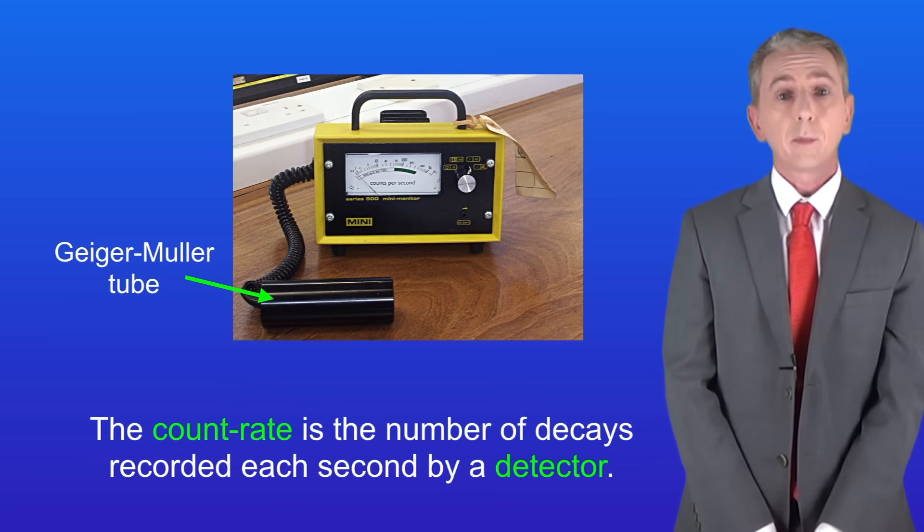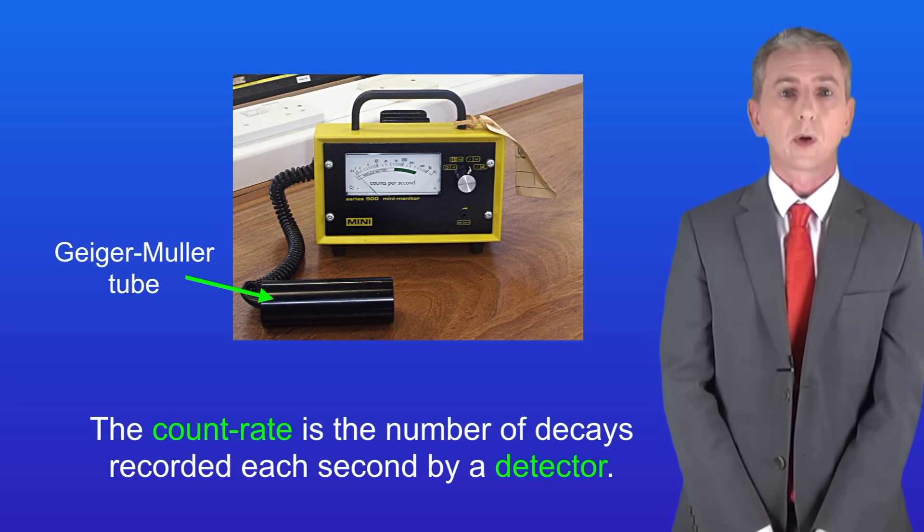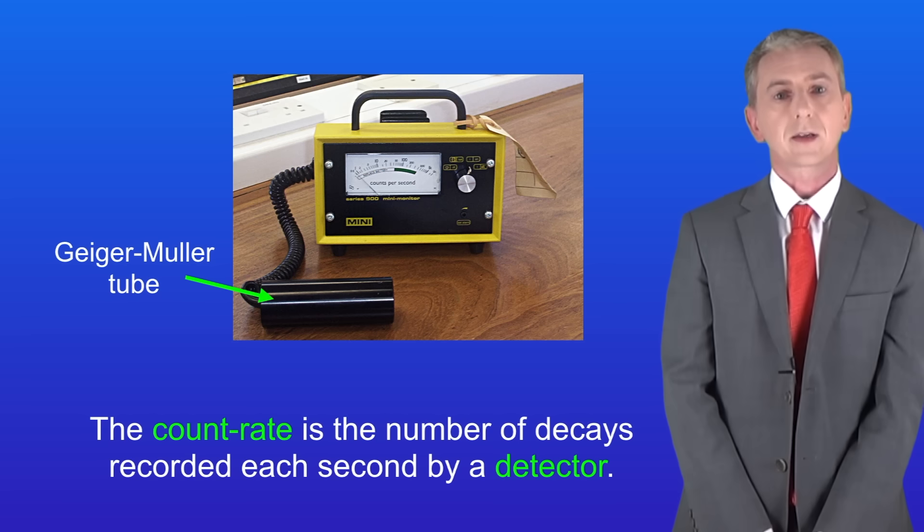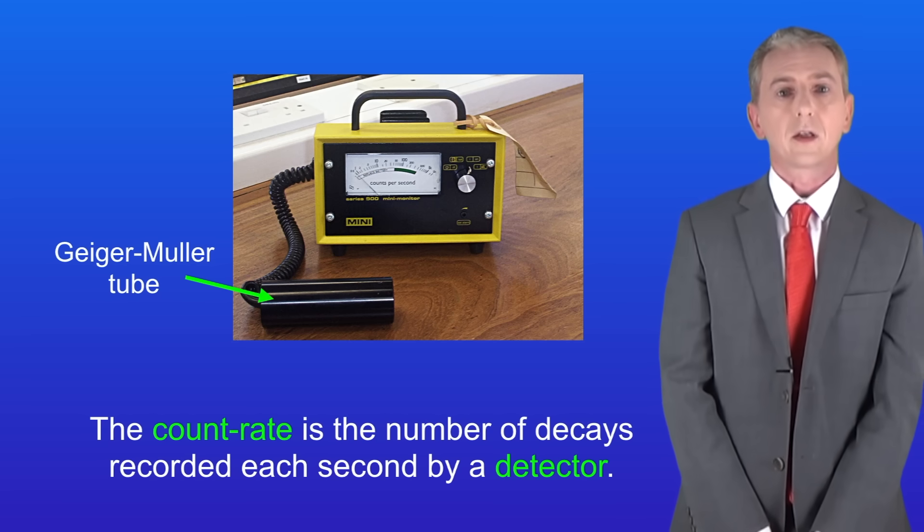The count rate is the number of decays recorded each second by a detector such as a Geiger-Müller tube. Now I should point out that count rate is not the same as activity. That's due to background radiation which we look at in a later video.